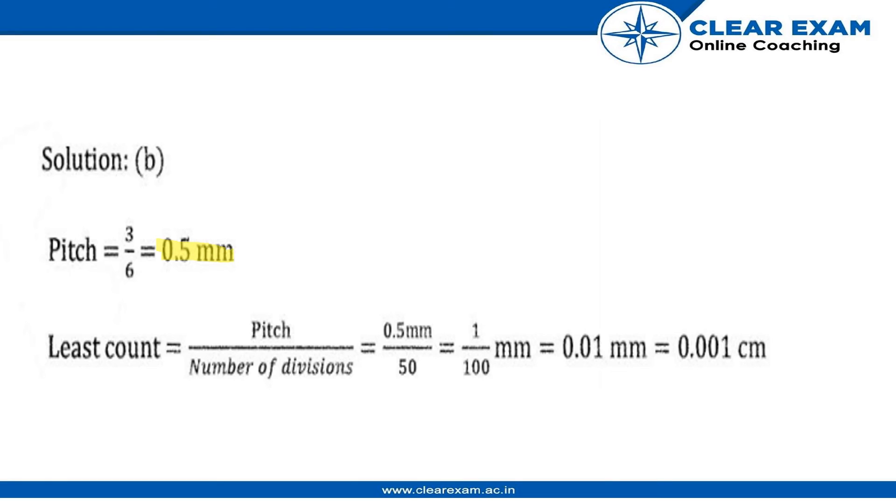Now for calculation of least count we have to simply do pitch divided by number of divisions. Number of divisions is given as 50 and pitch is 0.5 which we have already calculated. So our answer will be 0.01 mm = 0.001 centimeter.